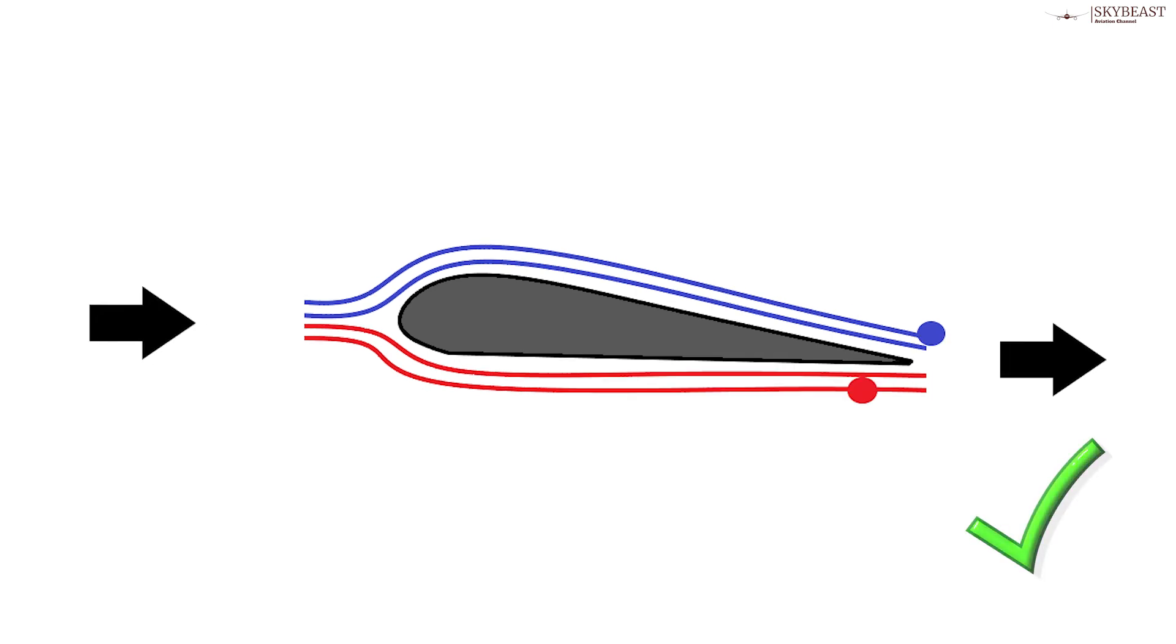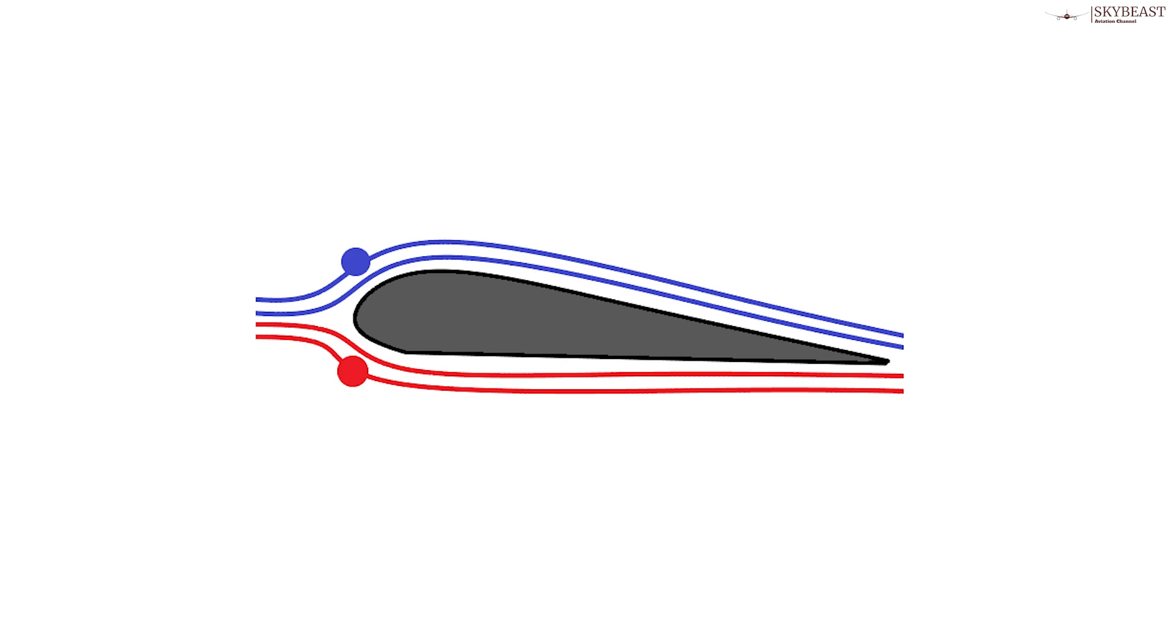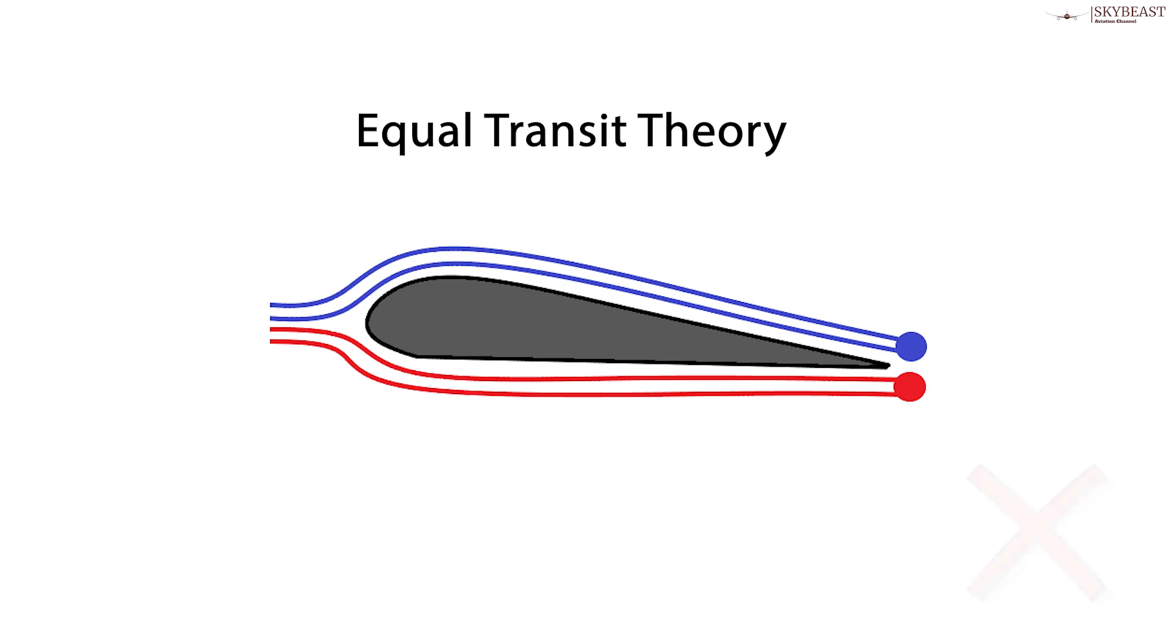This flaw in the standard explanation of an airfoil goes by the technical name of the equal transit theory. That's just named for the incorrect idea that the airstream splits apart at the front of the airfoil and meets up neatly again at the back.